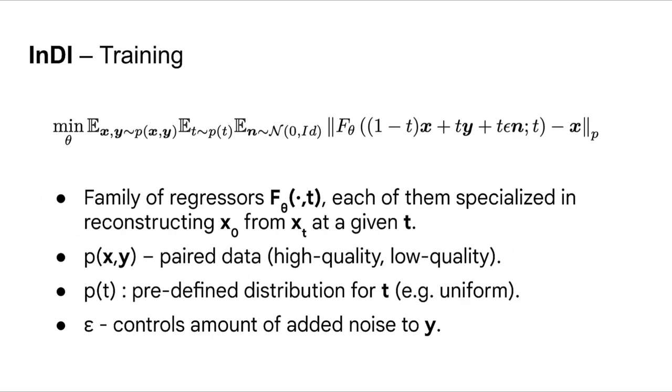The core block of INDI is a neural network that predicts the clean image given an intermediate degradation. We just use a standard L2 loss to minimize the pixel reconstruction error. What we learn in practice is a family of continuous regressors, here represented by f_theta, each of them specialized in estimating the clean image given x_t and the parameter t. Please check our paper for more details.